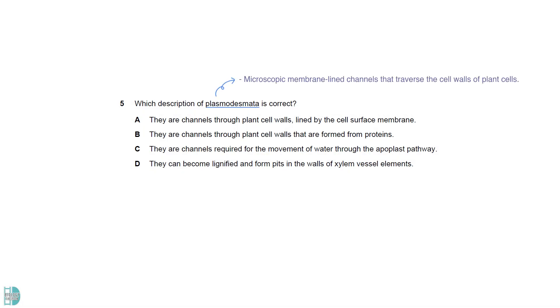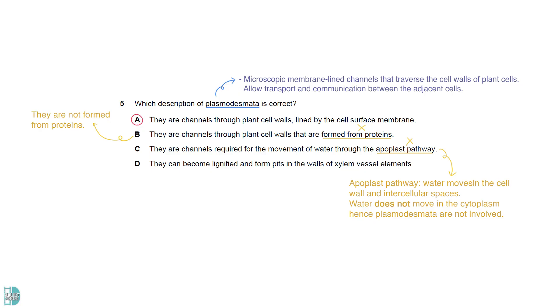Plasmodesmata are microscopic membrane-lined channels that traverse the cell walls of plant cells. They allow transport and communication between the adjacent cells. A is the correct description. B is wrong as they are not formed from proteins. C is incorrect because the apoplast pathway refers to water movement in the cell wall and intercellular space. Water does not move into the cytoplasm, hence plasmodesmata are not involved. D is wrong because pits are non-lignified areas within a lignified cell wall.